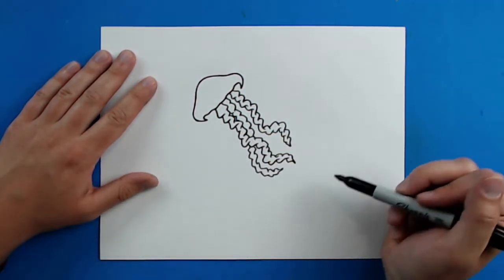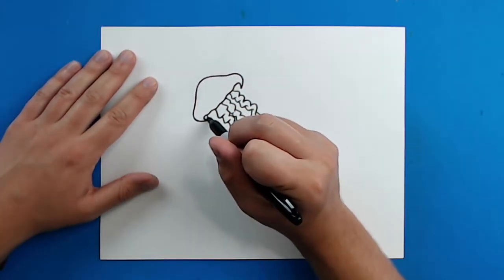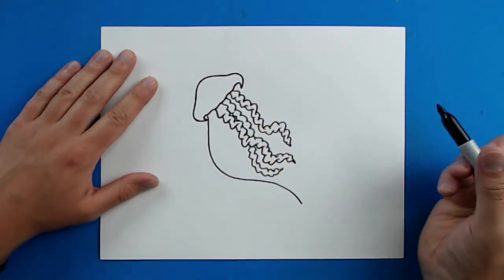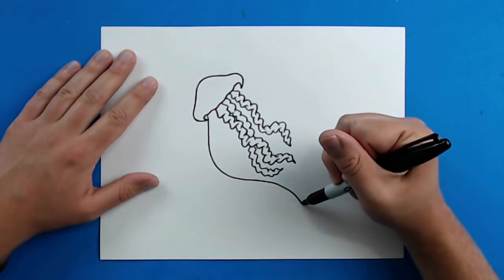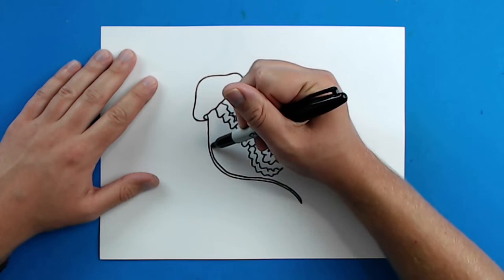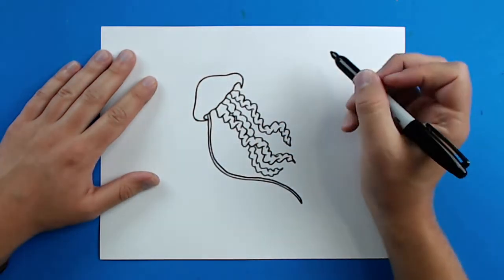Now for the long tentacles of the jellyfish. So these kind of go all over the place, so I'm just going to start them up there and then just kind of draw them out like this. Then I'm going to start back here, and I want to keep these tentacles really close together, like that.